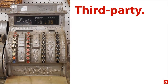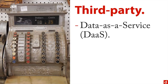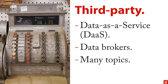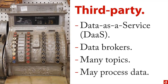Another option is to use data from a third party. These go by the name data as a service, or DaaS — you can also call them data brokers. Data brokers can give you an enormous amount of data on many different topics, and they can save you time and effort by doing some of the processing for you. That can include things like consumer behaviors and preferences, contact information, marketing, identity, and finances.